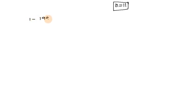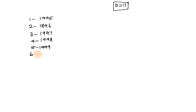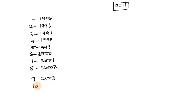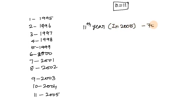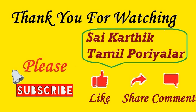First year is 1995, second year 1996, third year 1997, fourth year 1998, fifth year 1999, sixth year 2000, seventh year 2001, eighth year 2002, ninth year 2003, tenth year 2004, and the 11th year is 2005. So in 2005, Subaro's salary will reach 7,000.